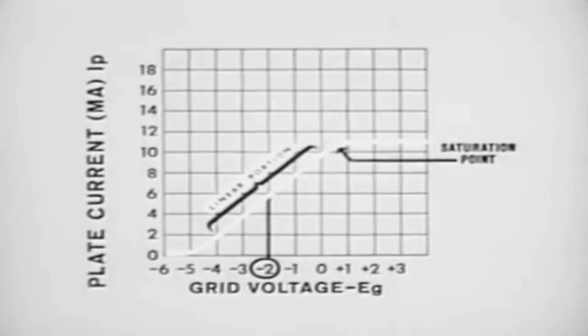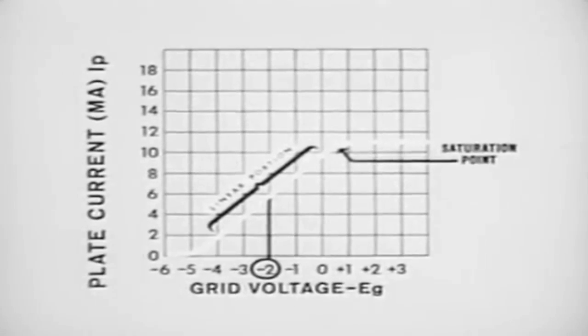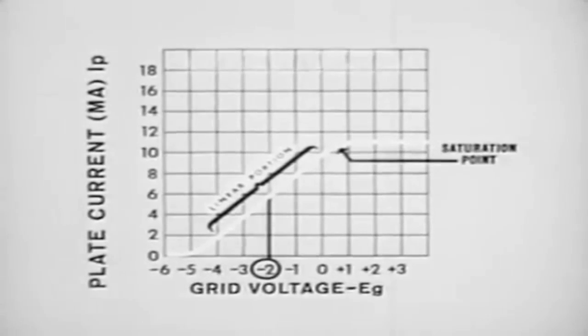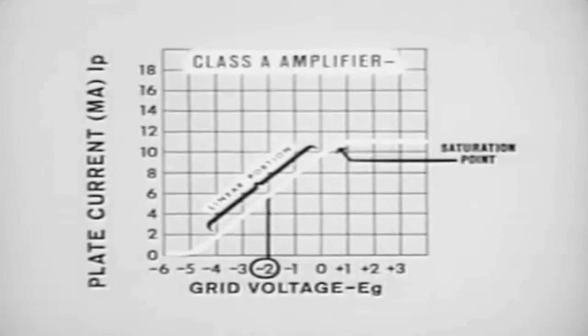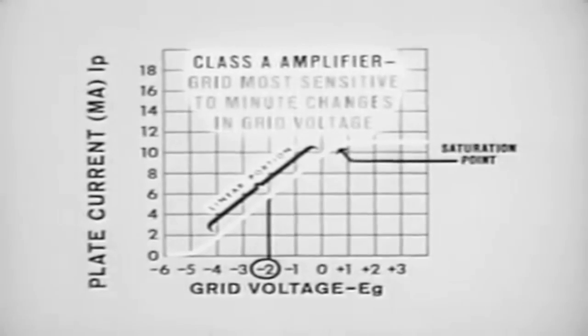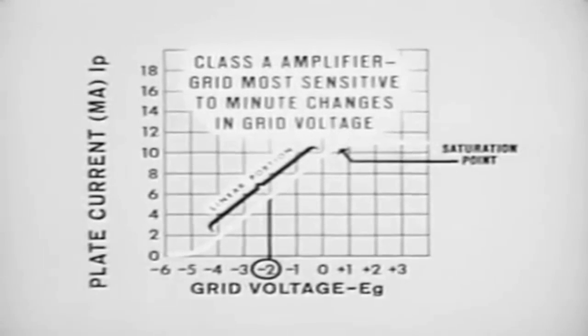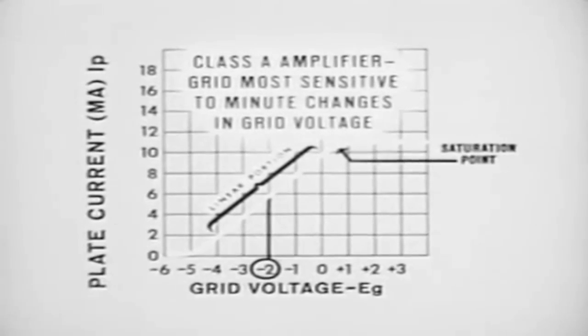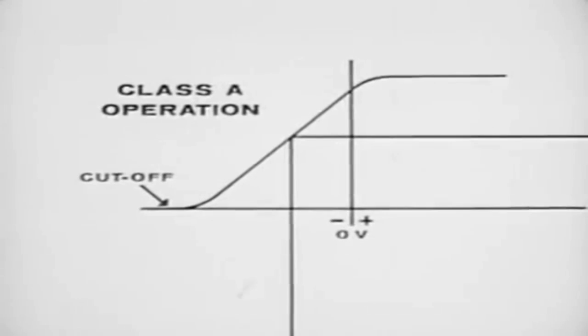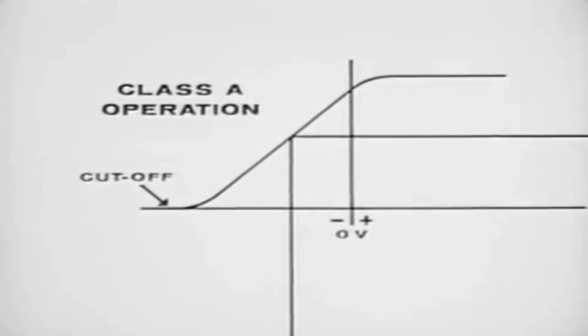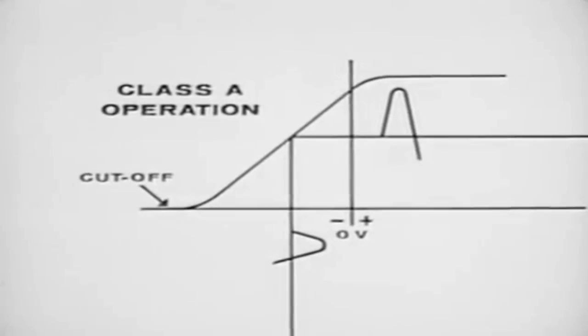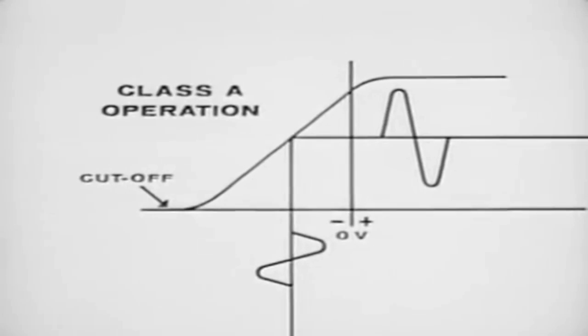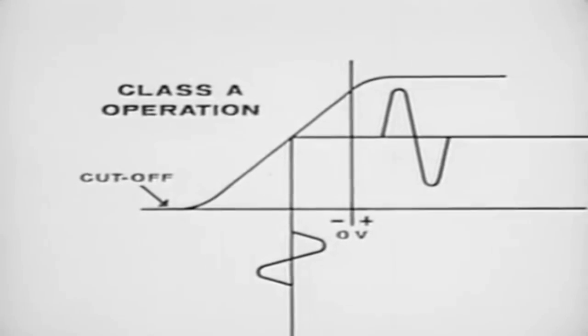If we apply the amount of bias which allows current to flow only within the linear portion, we are operating the tube as a linear amplifier, or as it is called, a Class A amplifier. In this type, the grid is most sensitive to a minute change in grid voltage. When operating a tube as a Class A amplifier, make sure that the signal voltage, shown here as the lower waveform, does not drive the tube beyond the limits of the linear portion of the curve. This will avoid distortion.